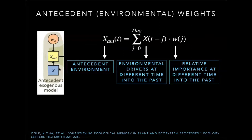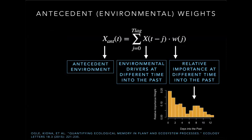In the left-most diagram, x-ant is determined by x and w-x, which are the antecedent environmental weights. In the equation, x represents the environmental drivers at different time lags into the past, and w, the antecedent weights, are the relative importance at different times into the past. So the antecedent environment x-ant is really a weighted sum of past environmental drivers.